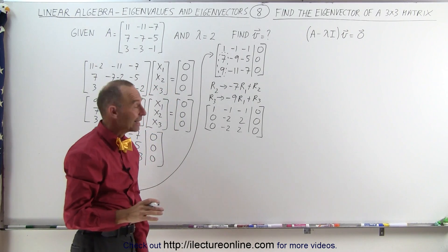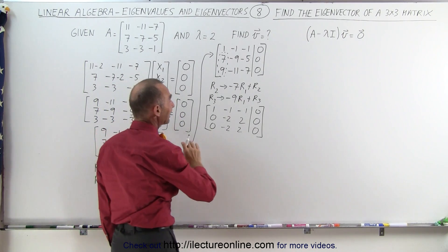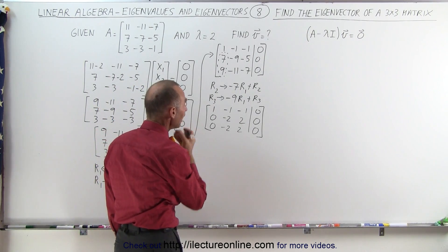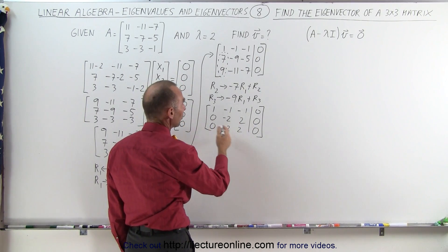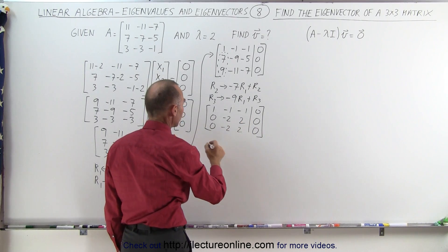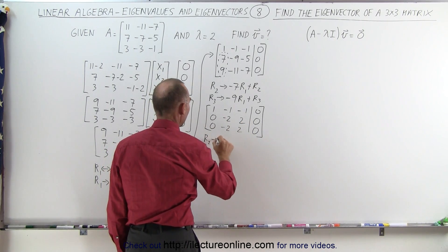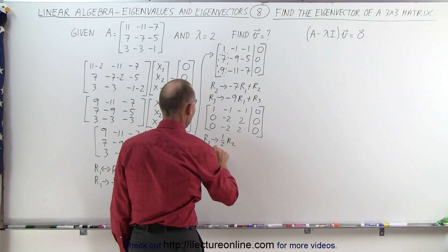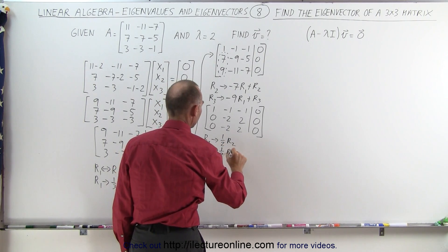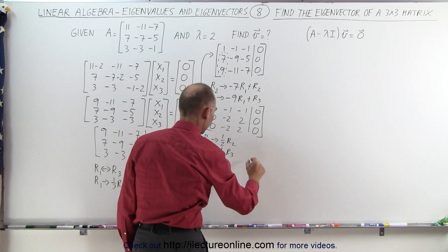Now notice that the two bottom rows are identical. Okay. So, what I can do here is, I can make it simpler and divide both of these rows by 2. So, I'm going to take row 2 and make it 1 half row 2. I'm going to make row 3 and make it 1 half row 3. So, the matrix looks a little bit simpler like this.